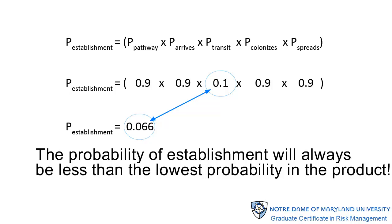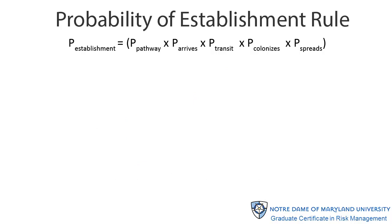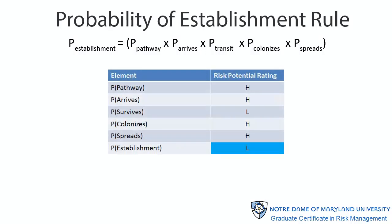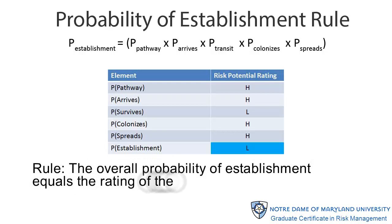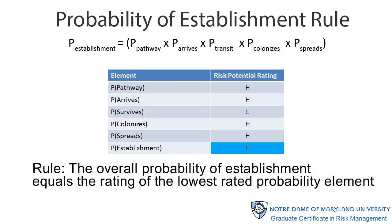The overall probability is always going to be less than the lowest value unless one of those values is 0 or all of the values are 1. That is an inevitable result of multiplying a series of numbers, each of which is between 0 and 1. For any series of multiplicative probability values, the rule for combining probability ratings is that the overall probability of establishment equals the rating of the lowest rated probability element. In the example shown here, four high-rated elements and one low-rated element yield a low overall probability of establishment. This will seem counterintuitive to people who have not thought carefully about how the numerical calculations work, so be prepared for people to object to this method. In fact, applying the logic of numbers, the overall probability of establishment is actually lower than the lowest rated element, so the rule we use may actually overstate the probability at times.